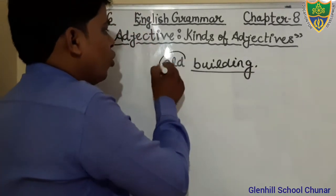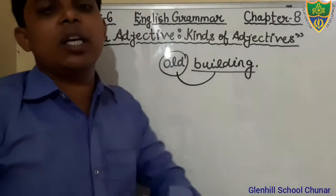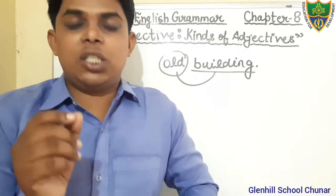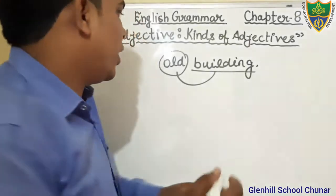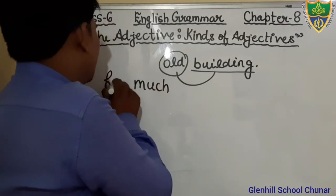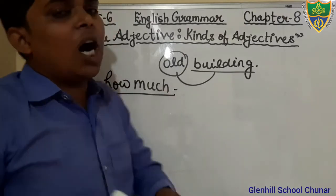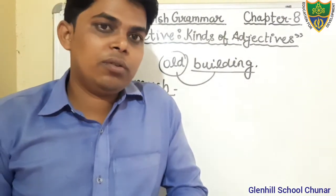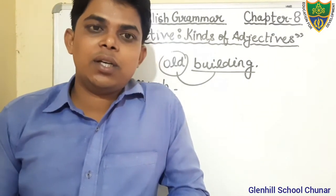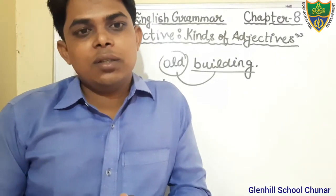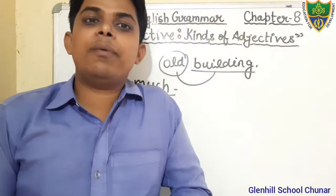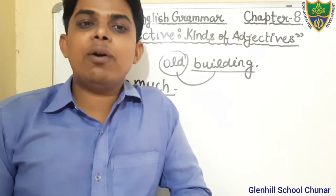The word 'old' denotes the quality of that building, therefore that is Adjective of Quality. And for quantity — Adjective of Quantity denotes how much of a thing is meant. It answers the question 'how much' and refers to uncountable things. For example: some water, any rice — that is Adjective of Quantity.